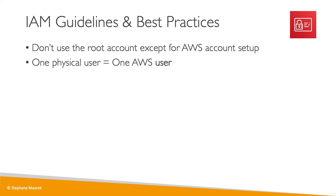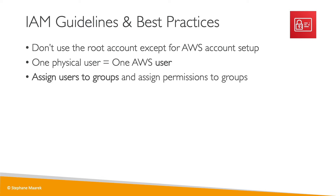One AWS user is equal to one physical user. So if a friend of yours wants to use AWS, do not give them your credentials. Instead, create another user for them. You can assign users to groups and assign permissions to groups to make sure that security is managed at the group level.